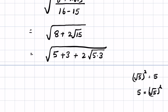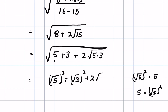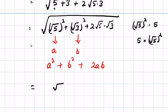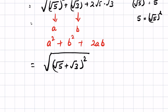We know that when a square root is squared it equals the number itself. If we let square root of 5 equal 'a' and square root of 3 equal 'b', then the expression is in the form a squared plus b squared plus 2ab. So we can write it as (square root of 5 plus square root of 3) whole squared, under the outer square root. The square root and the square cancel, giving the final answer: square root of 5 plus square root of 3.